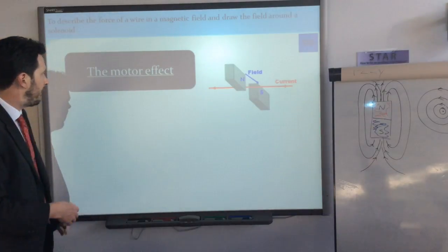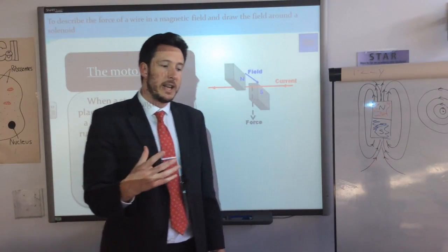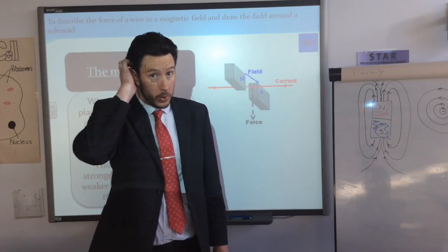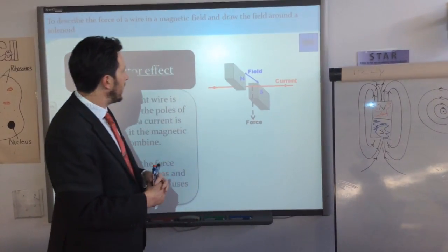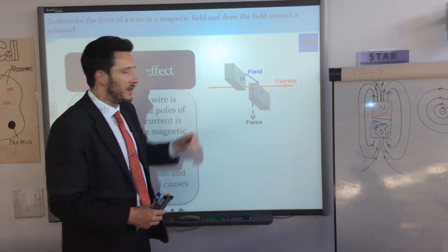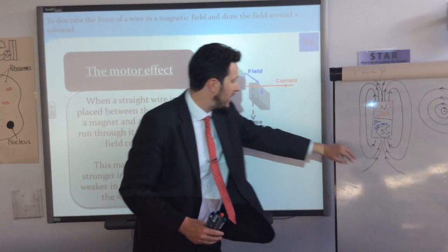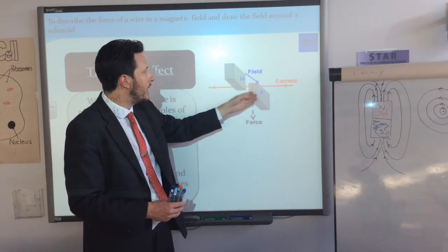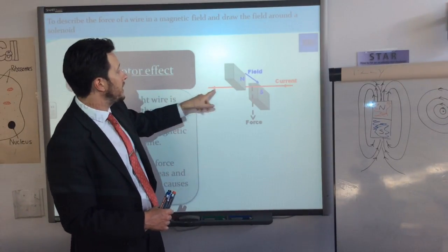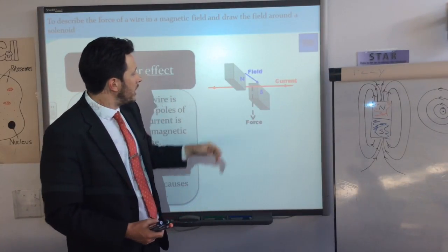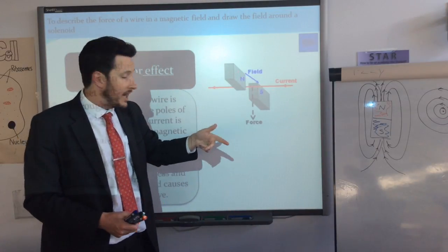This leads to the motor effect. The motor effect is where you use Fleming's left-hand rule. If you place a straight wire in a magnetic field it will experience a force, because of the interaction between the magnetic field generated by the wire and the magnetic field of the magnet. The field lines go from north to south straight across the gap. The current is flowing from right to left, so the force felt is downwards. The diagonal arrows here mean the field is actually going into the board.